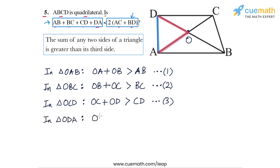In triangle ODA, the sum of the two sides OD plus OA will be greater than the third side DA. Let's call this inequality 4.